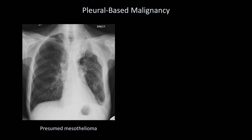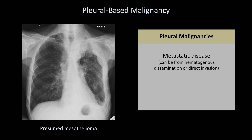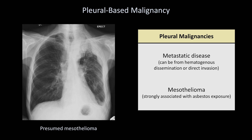The final pleural abnormality is a pleural-based malignancy. These can be difficult to conclusively distinguish from soft tissue masses or an unusual loculated effusion. Most pleural malignancies are the consequence of metastatic disease, either hematogenous dissemination or direct invasion. However, mesothelioma, a primary malignancy of the pleura, has a very increased incidence in patients with prior asbestos exposure.